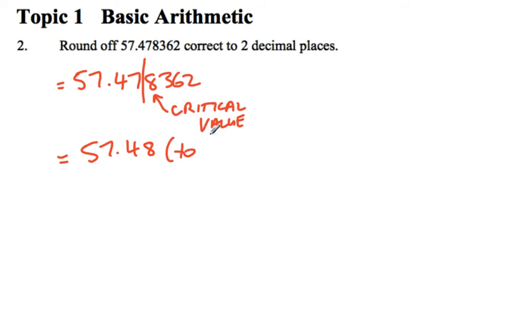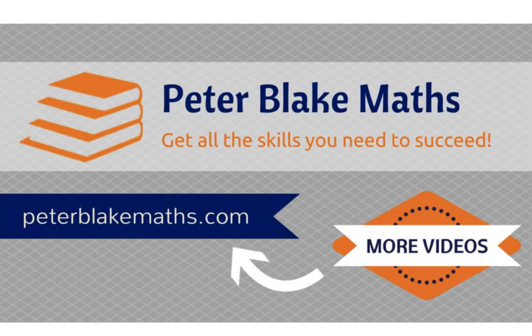And once again we'll just indicate to the marker that we've rounded that off to two decimal places. If I'm lazy I'll just put to 2 d.p. So that's a bit of rounding off. We'll catch you for the next video. Thanks.